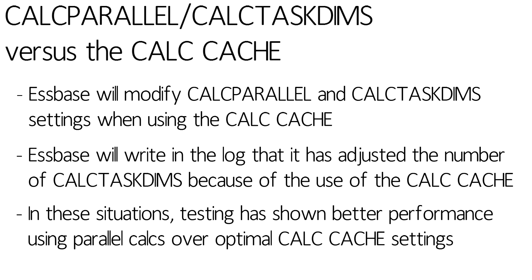If you're optimizing for parallel calculation, you're probably putting what we call non-aggregating sparse dimensions at the end of your outline — things like scenario or version. Just be aware that if you try and optimize for both of them, you're going to mess everything up. So pick: do you want to optimize for parallel calc by setting CalcParallel and CalcTaskDims and not using the CalcCache, or are you going to try and get the best possible CalcCache, which means you're probably hurting your parallel calculation.